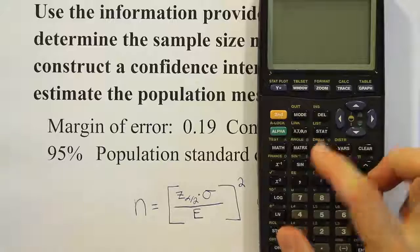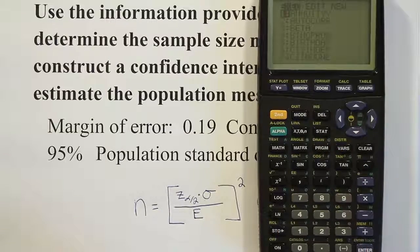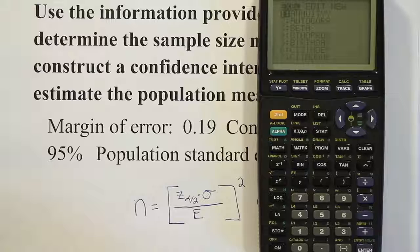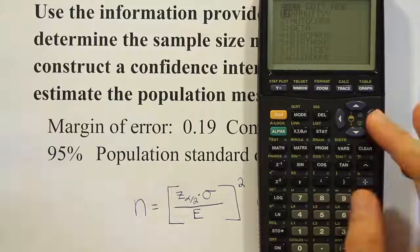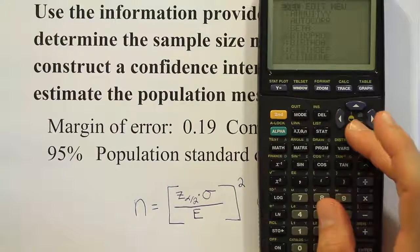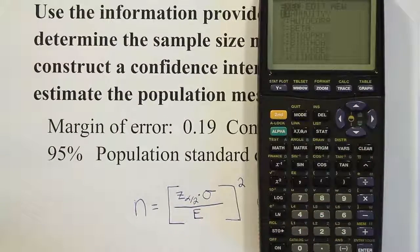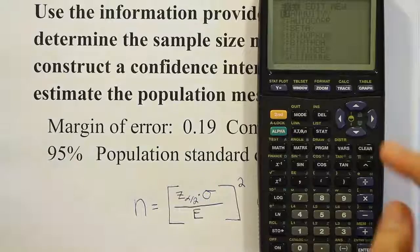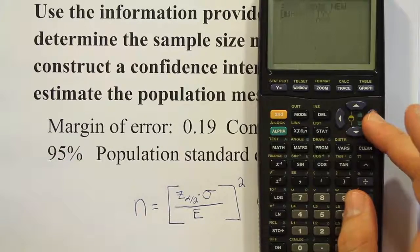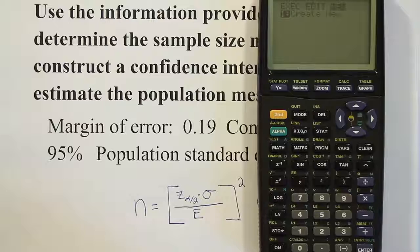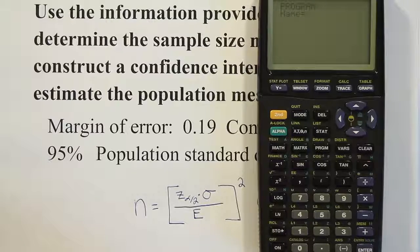Press the program button on your graphing calculator. I have a whole bunch of programs already in mine — each one is written for a special type of problem. What I want to show you is something simple that anyone can learn to do. Go over to where it says "new" and press enter — it will allow you to name your new program.